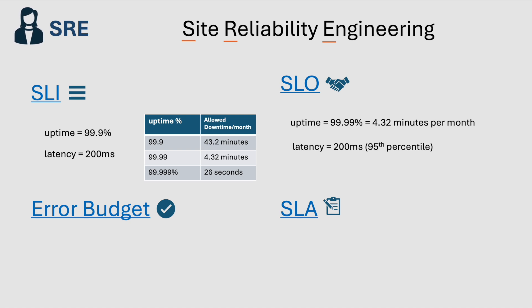When the uptime SLO is 99.99% per month, the service is allowed a maximum of 4.32 minutes per month of downtime. This is called the Error Budget — it represents the allowed amount of failure, calculated as 100% minus the SLO. These error budgets help teams decide how frequently to roll out new features.